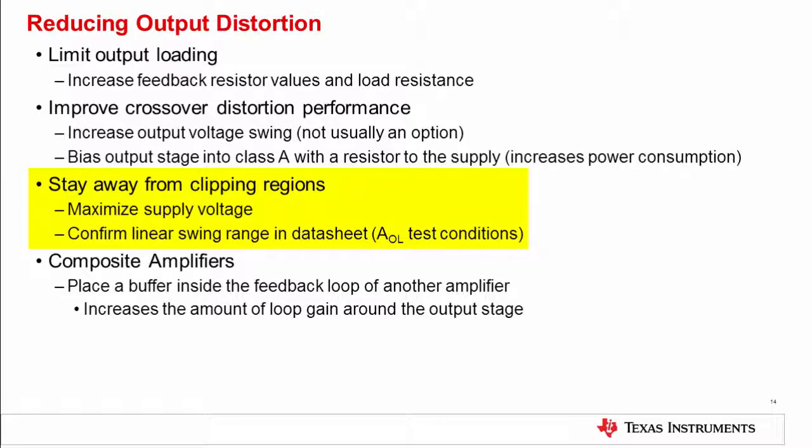Next, stay away from clipping regions. This can be done by maximizing the power supply voltages. Also, make sure you understand the linear output range from the open loop gain test conditions in the datasheet. Finally, composite amplifiers can be a great way to decrease output stage distortion. When you place a buffer in the feedback loop of another amplifier, this increases the amount of loop gain around the output stage.